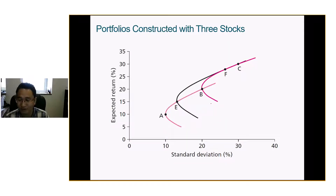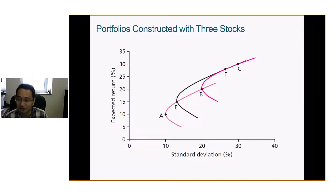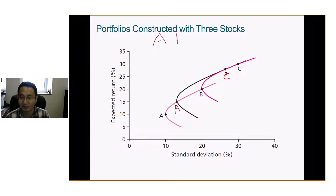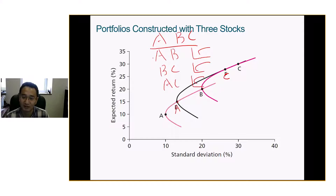We've been looking at two assets — stock and bonds. What if you have three? For each pair — A and B, B and C, A and C — you can draw a curve. So for stock A and B, you draw one curve; stock B and C, another curve; stock A and C, another curve. Then you stack them all together — that's when you get the efficient frontier.